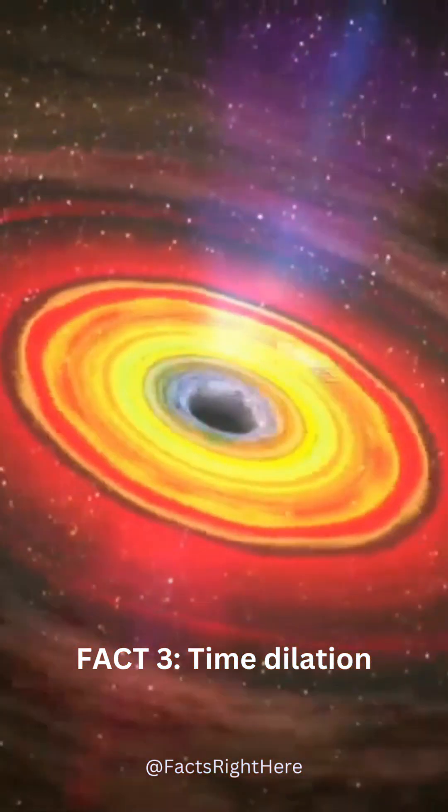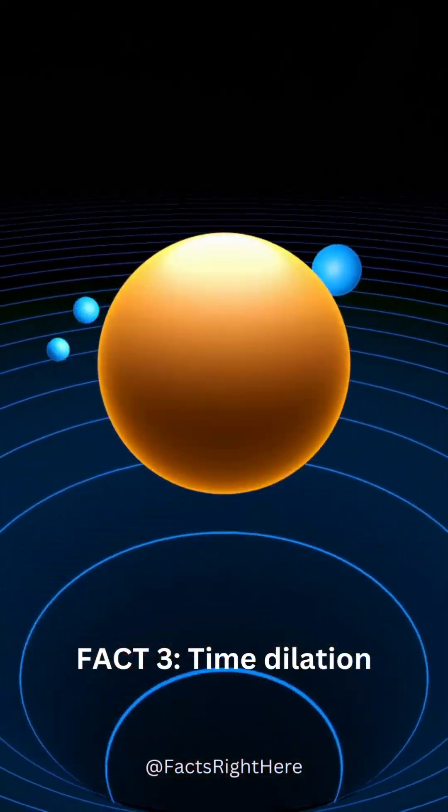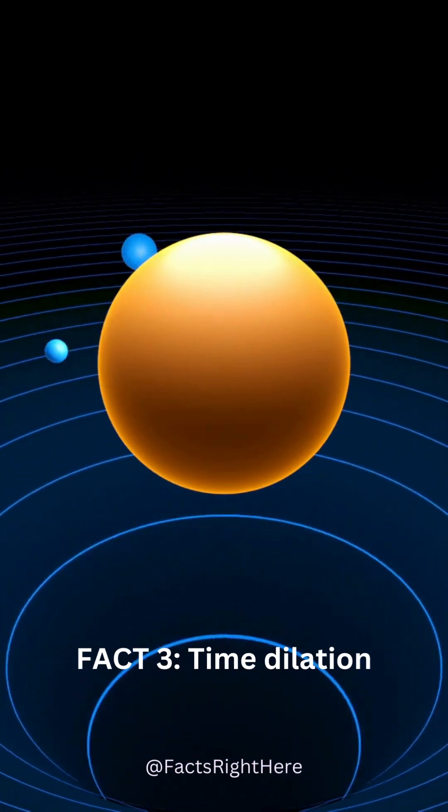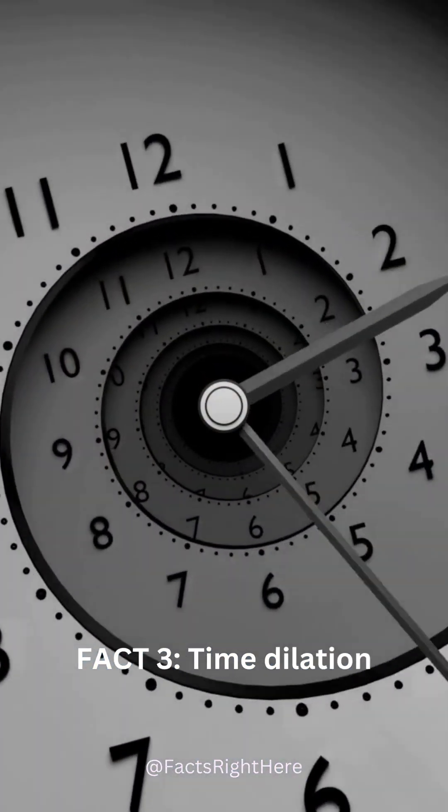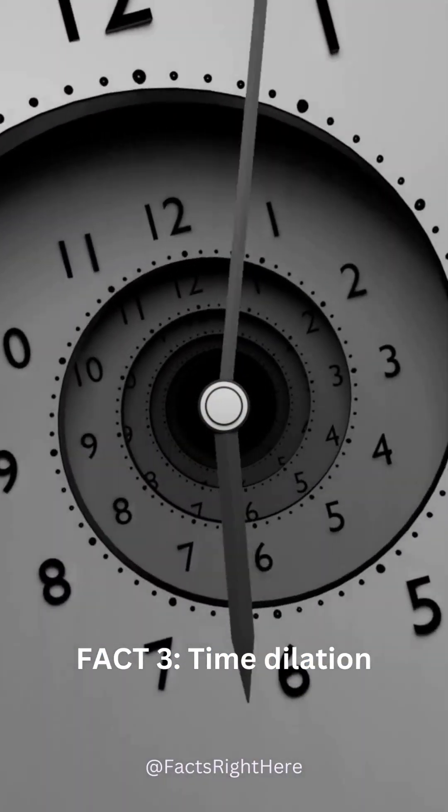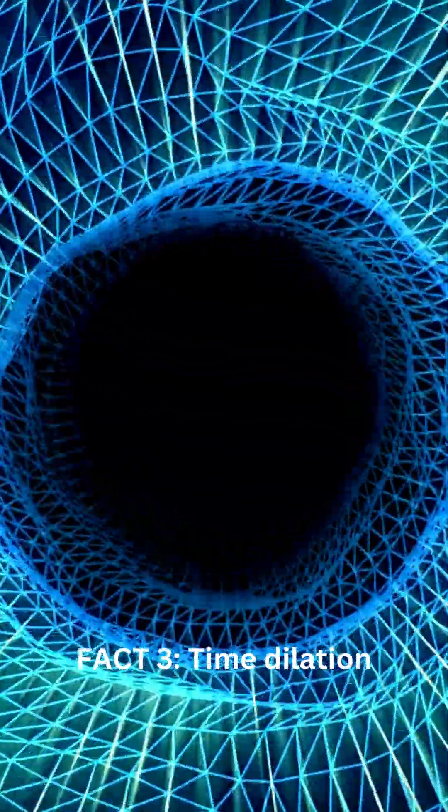Time behaves differently near a black hole due to its intense gravity. The closer you get, the slower time moves relative to an observer far away. This is called gravitational time dilation.